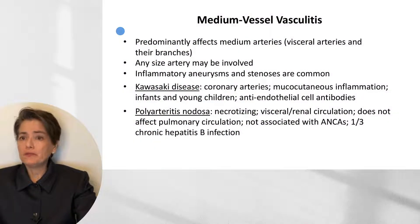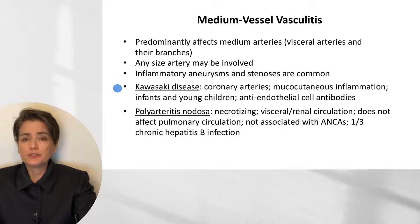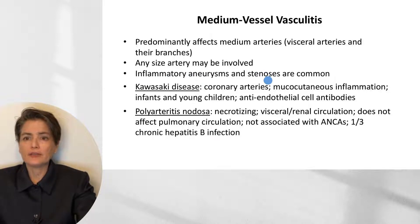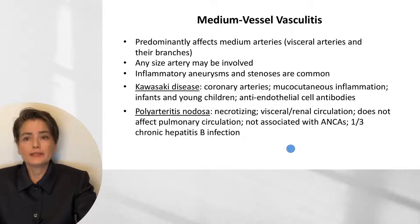The next category is medium vessel vasculitis, which predominantly affects medium arteries or visceral arteries and their branches, though any size artery may be involved. Inflammatory aneurysms and stenoses are common. The two diseases here are Kawasaki disease — which particularly affects the coronary arteries, can present with mucocutaneous inflammation, and tends to affect infants and young children, with anti-endothelial cell antibodies recognized in this disease — and polyarteritis nodosa, a necrotizing vasculitis of the visceral and renal circulation that spares the pulmonary circulation, not associated with ANCAs but with chronic hepatitis B infection.